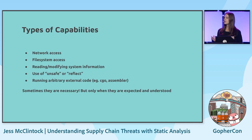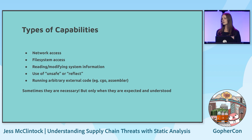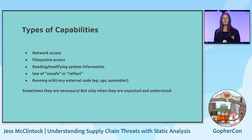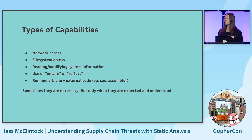There are several types of things we classify as capabilities. These include things like network access, file system access, reading and modifying the system, unsafe code, or anything that would allow for arbitrary code execution such as cgo. Capabilities are often quite necessary — these are all things used widely without malicious intent and that are actually required. But when these capabilities aren't expected, it's important that it's understood why they arise.